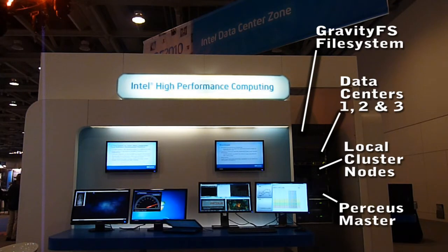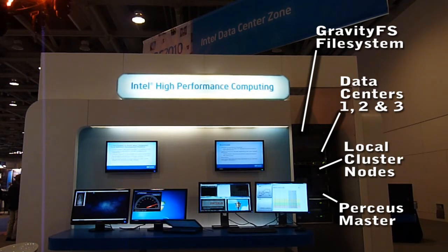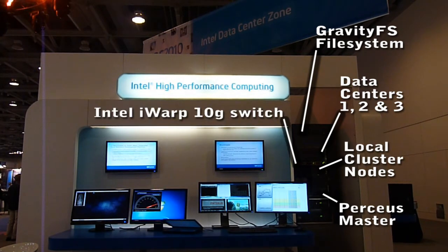Below that is the Perseus Master, which provisions both our virtual nodes and virtual machines with Gravity OS, our HPC and cloud geared Linux distribution that is compatible with both Debian and Ubuntu packages. All of this is connected with Intel's low latency iWarp 10 gigabit fabric.